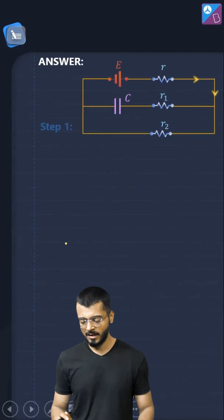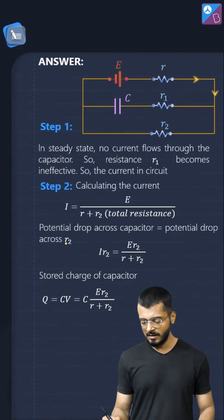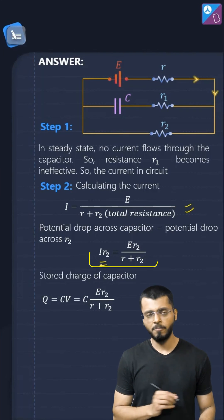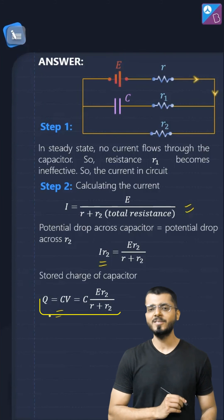Here is the answer. Right, you guys can see that the current is this and we can multiply that to get the value of potential and we can multiply the capacitance to get the value of charge.